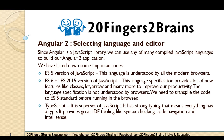ES6 or ES2015 version of JavaScript provides a lot of new features like classes, let, arrow, and many more to improve our productivity. However, this language specification is not understood by browsers — we need to transpile the code to ES5 standard before running it in the browser.